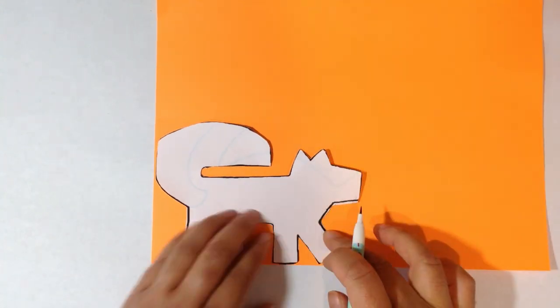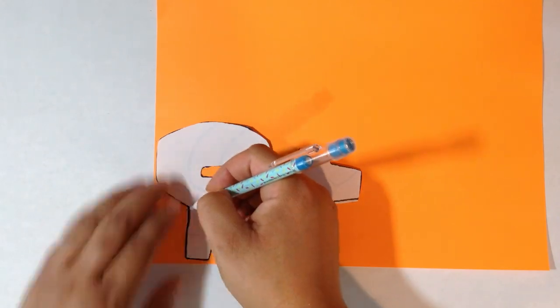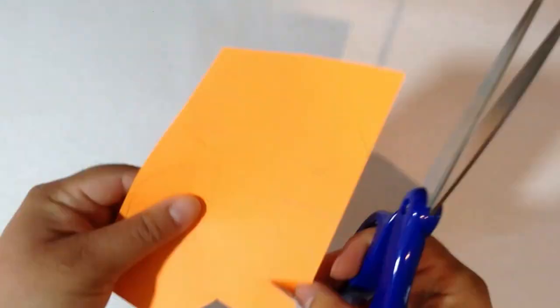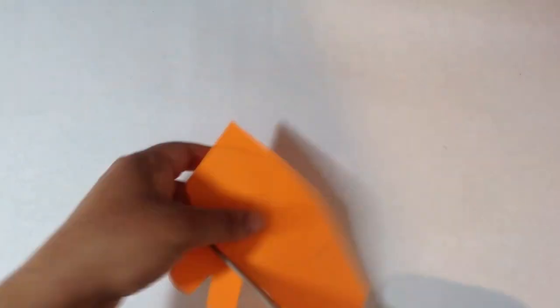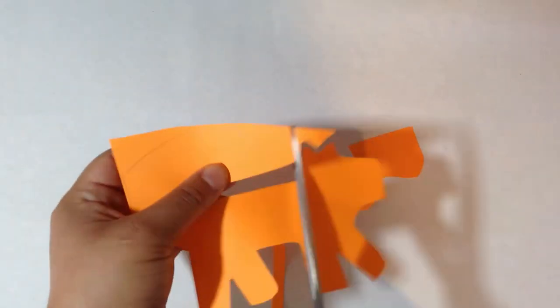Once you are finished, choose any colored piece of paper and trace your stencil onto it. Once you are finished, you are going to cut it out as close to the lines you have traced. Remembering again for little ones to always ask an adult for help.